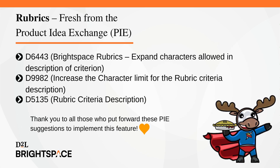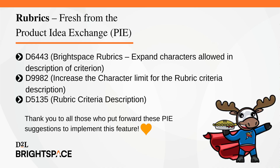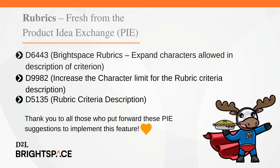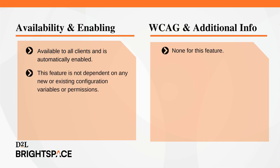The Rubrics feature implements the following PI items: D6443, Brightspace Rubrics — Expand Characters Allowed in Description of Criterion; D9982, Increase the Character Limit for Rubric Criteria Description; and D5135, Rubric Criteria Description. Thank you to all those who put forward these PI suggestions to implement this feature. The Rubrics feature is available to all clients and is automatically enabled. It is not dependent on any new or additional configuration variables or permissions.